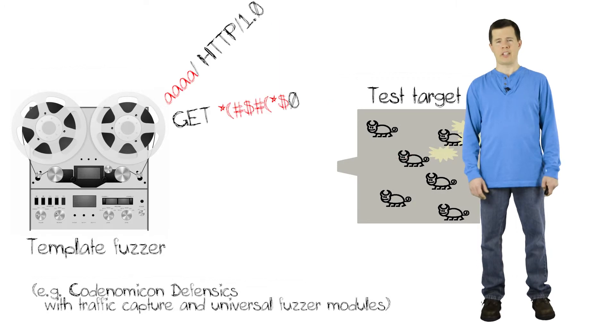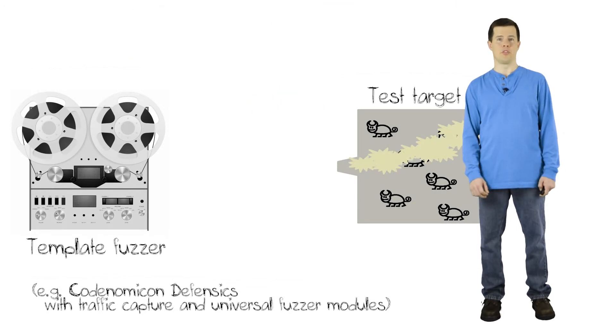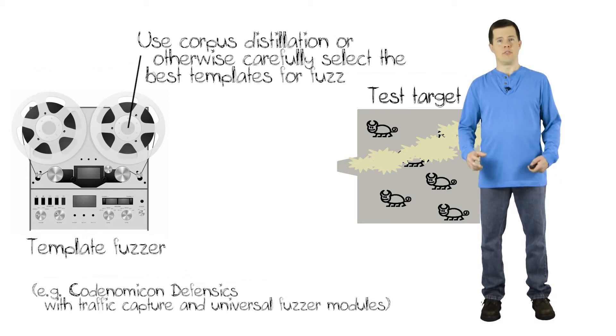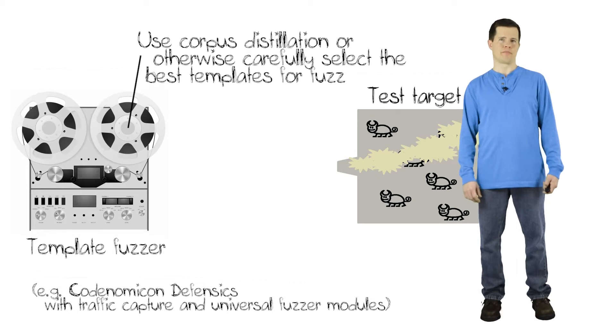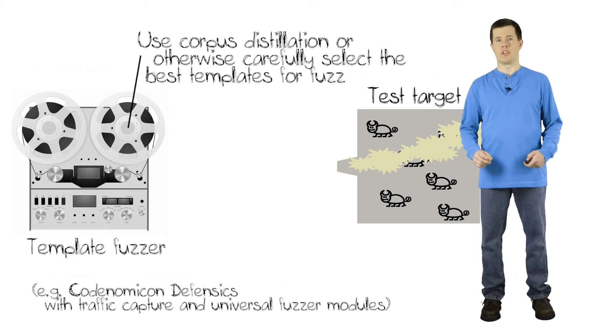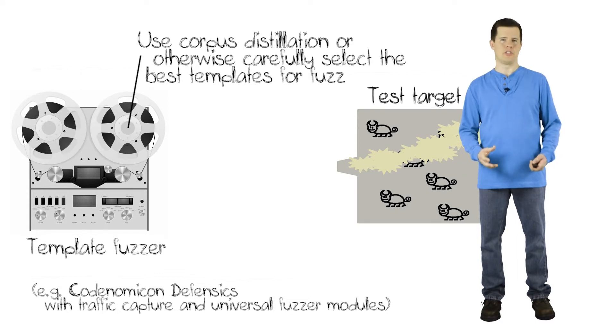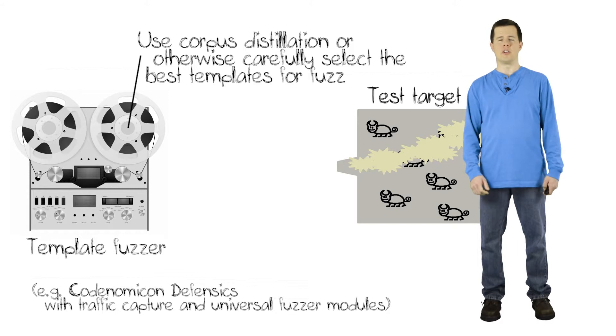However, template fuzzing has some pretty important shortcomings. The first one is, the testing that you're doing is only as good as the recording that you got in the first place. So if there are other messages in that protocol, and you didn't get those messages in your recording, then you're never going to reach those parts of the code in the target to test them.